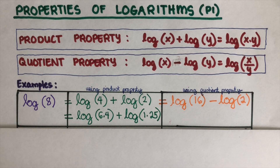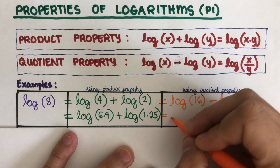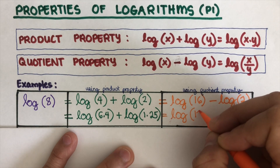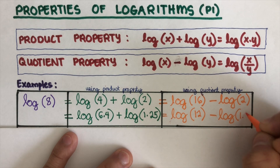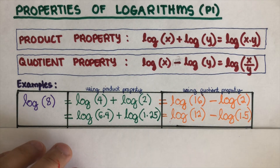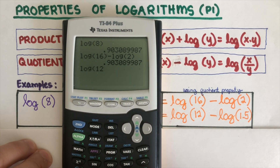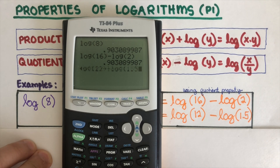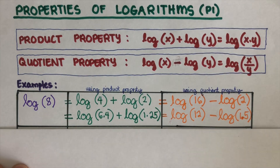I can also use decimals with the quotient property. For example, log of 12 minus log of 1.5 is still equal to log of 8, since 12 divided by 1.5 is 8. The calculator confirms the answer is the same. This shows there are many combinations we can form using the product and quotient properties.